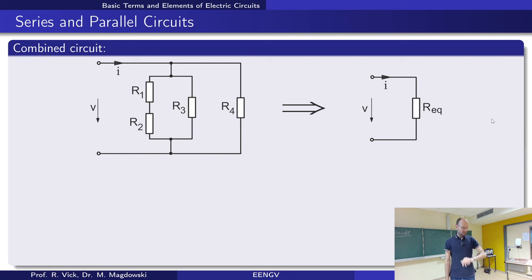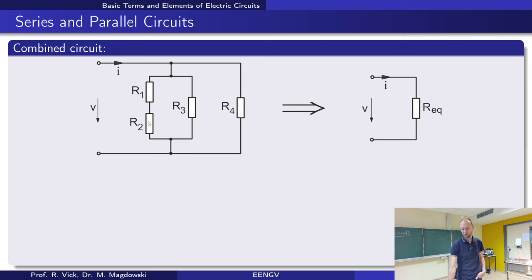Now we can look at some more interesting, sophisticated examples. This is also what you will do tomorrow in the exercise, looking at combined circuits. For example, if we have a circuit with two resistors in series, another resistor in parallel, and then a last resistor in parallel, we are looking for the equivalent resistance. How would you calculate this?